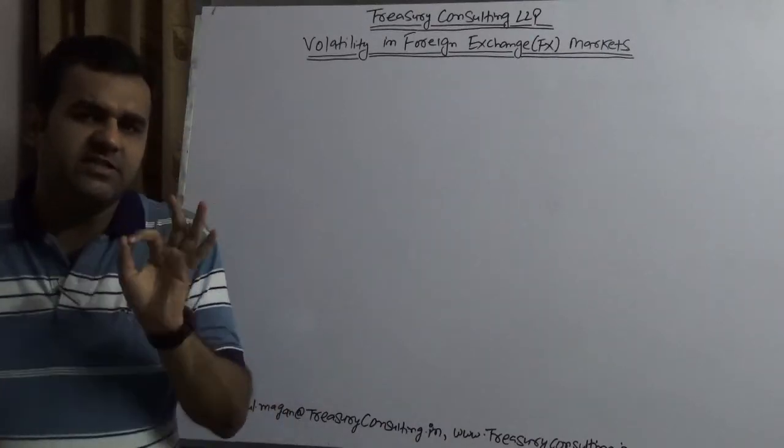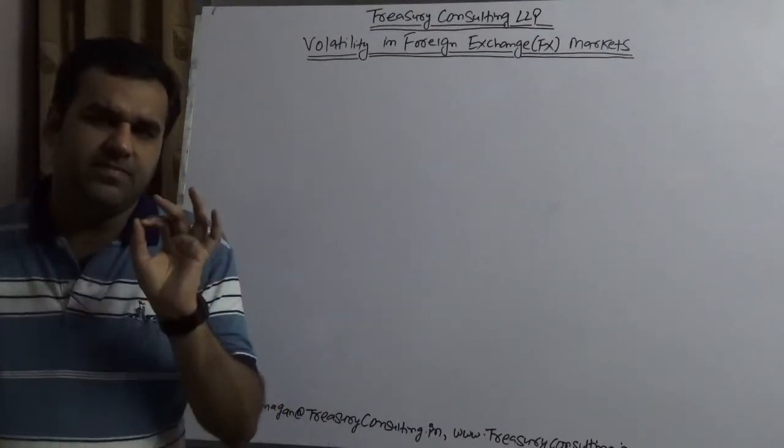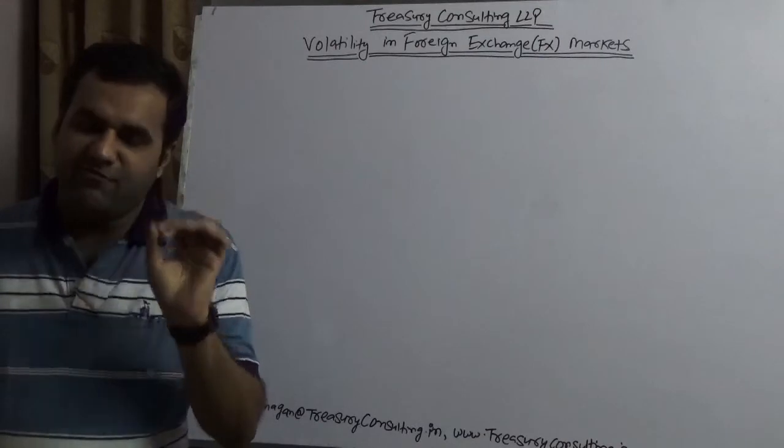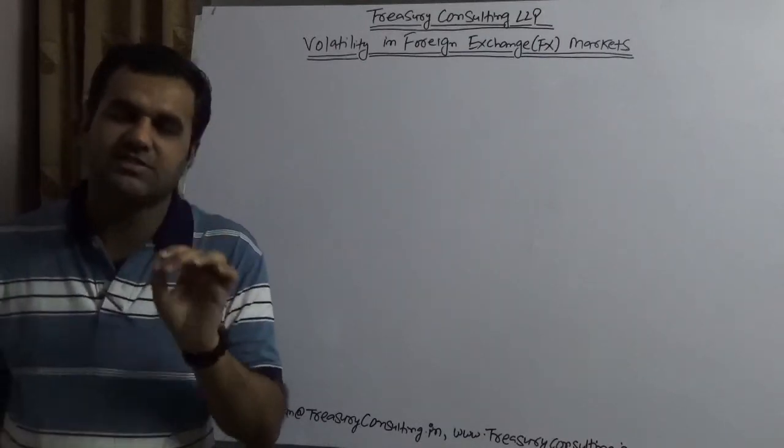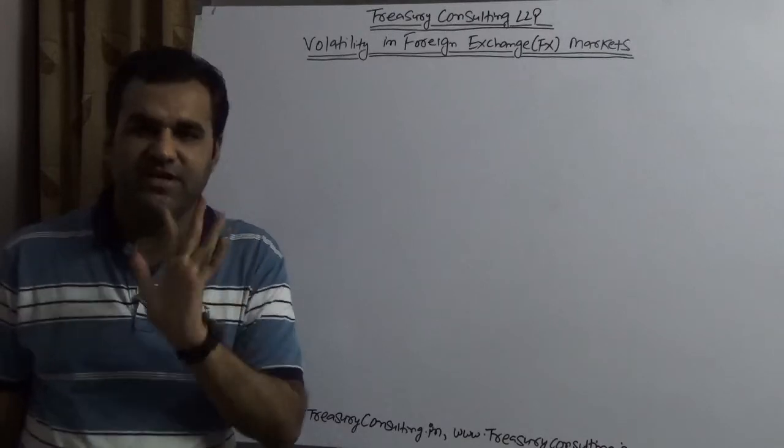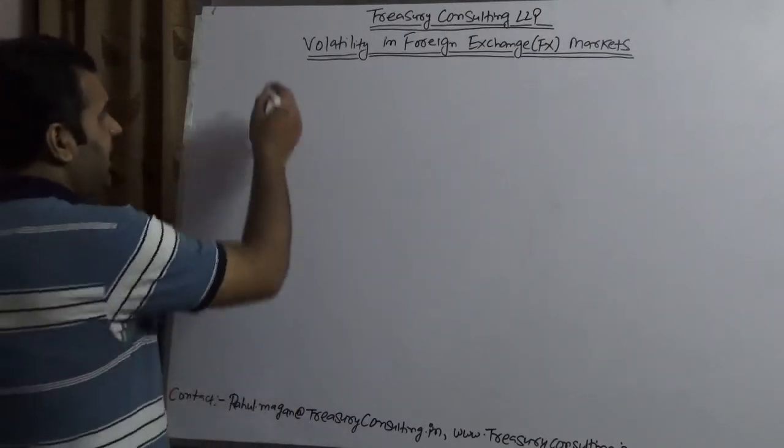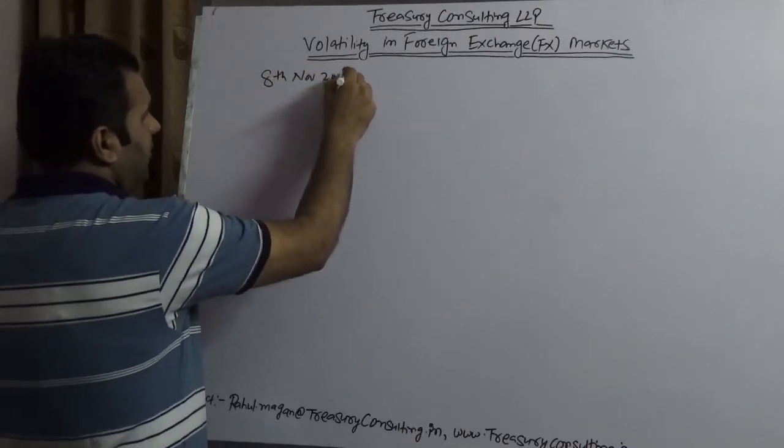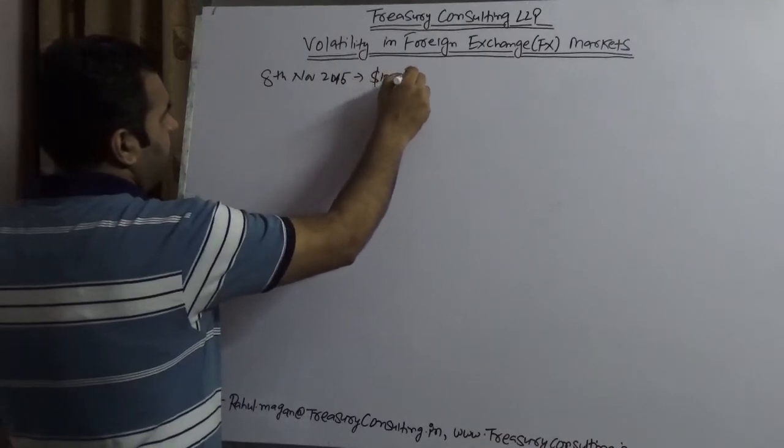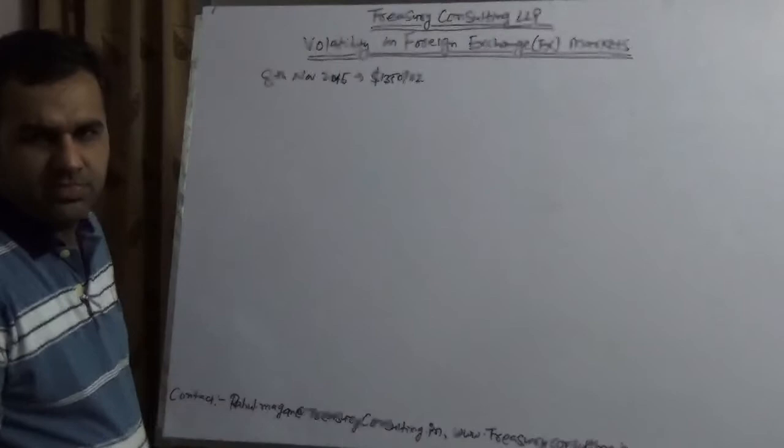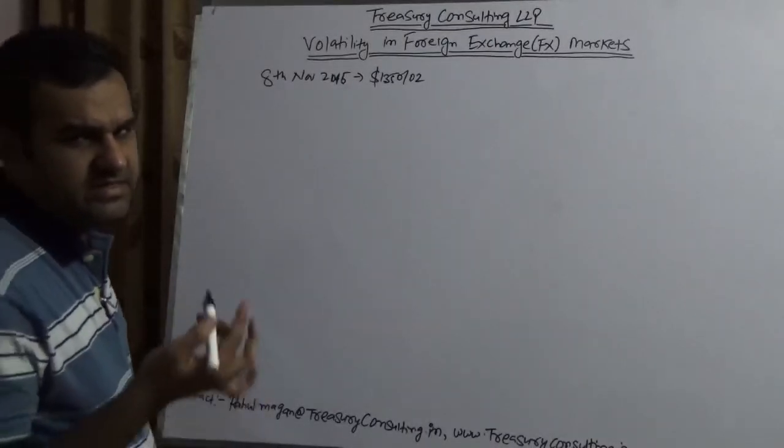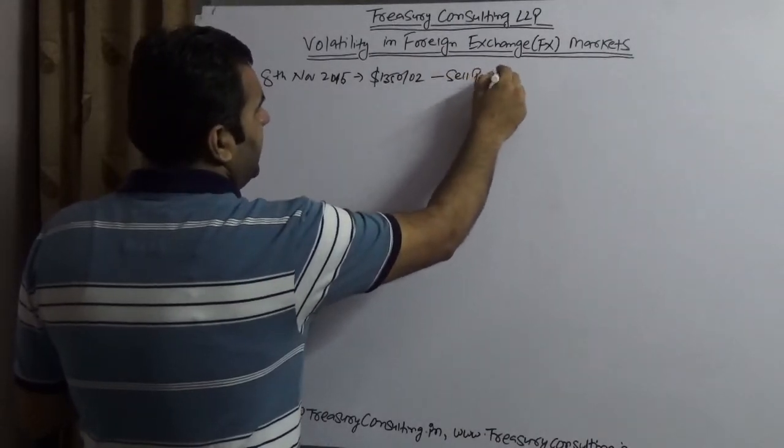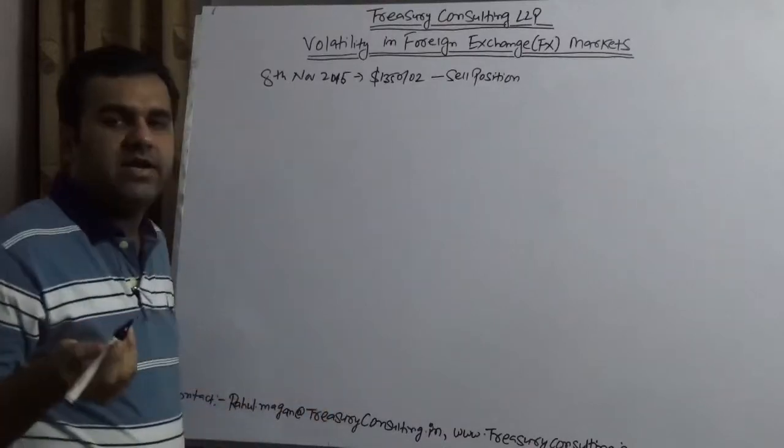The impact here is that on 8th November 2016 when people got to know that Trump turned out to be President, immediately the S&P, FTSE and majority of the indexes lost considerably and gold went up to $1,350. On 8th November 2016, gold went to $1,350 per ounce which is extremely high. Treasury Consulting LLP told everybody that this is a sell call.